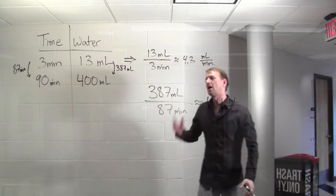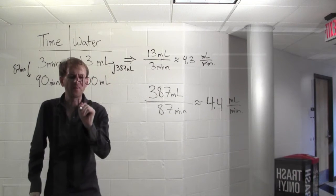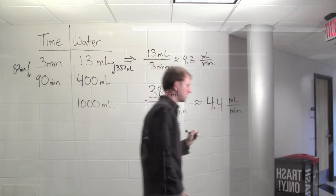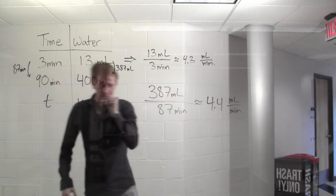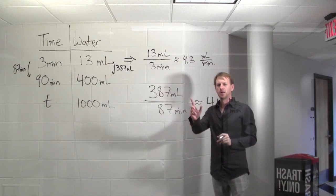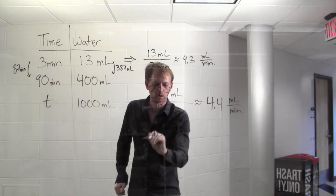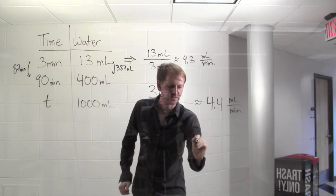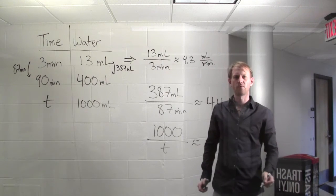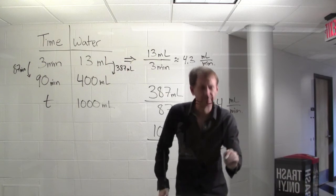Now, at what time is there 1 liter of water in the cube? That would be 1,000 milliliters. At what time? So we should use T for the variable there. We have to solve the following equation. We want 1,000 over T to be approximately, well, what's between 4.3 and 4.4? 4.35.